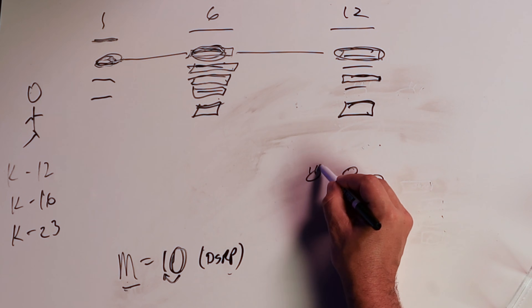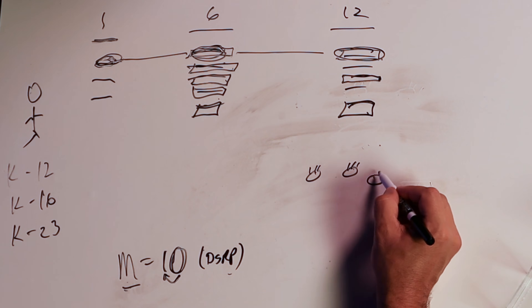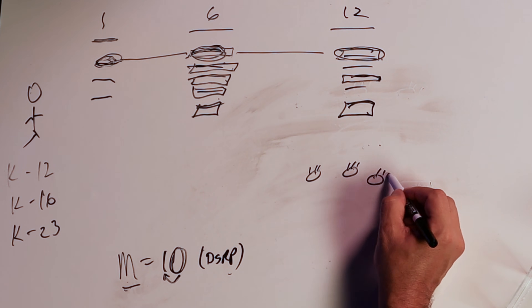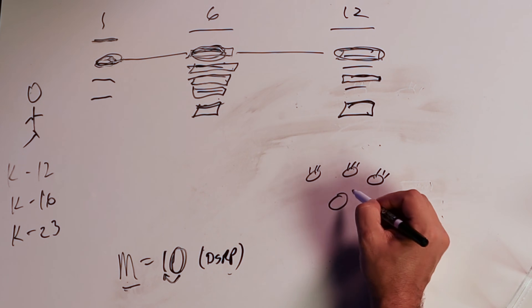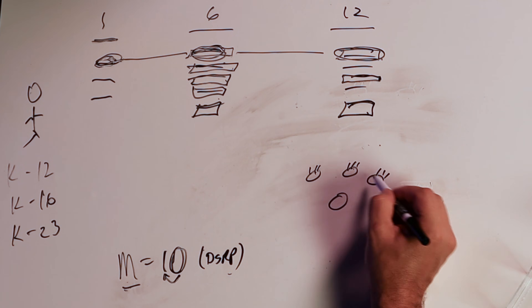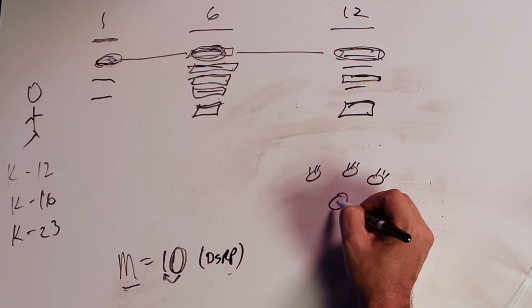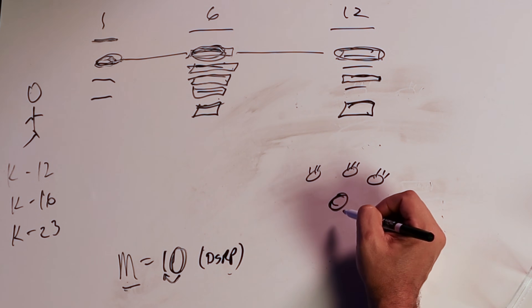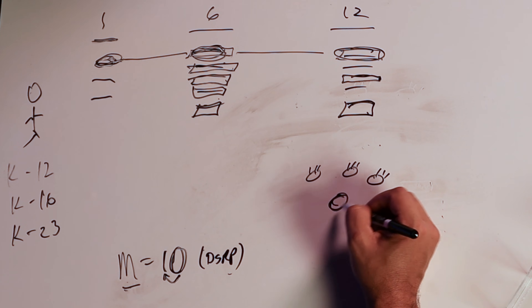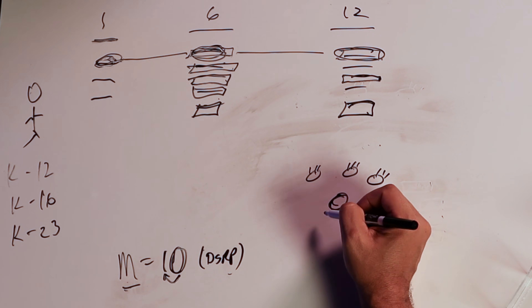When a kid learns a structure — say, perspective circle, which is taking multiple perspectives on a thing and seeing that thing differently as a result — they're learning a structural pattern rather than content.